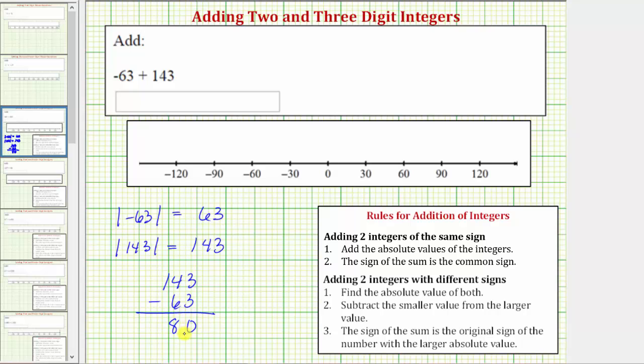But we still need to determine the sign of the original sum. The sign of the sum is the original sign of the number with the larger absolute value. So because positive 143 had the larger absolute value, we now know the original sum is positive 80.